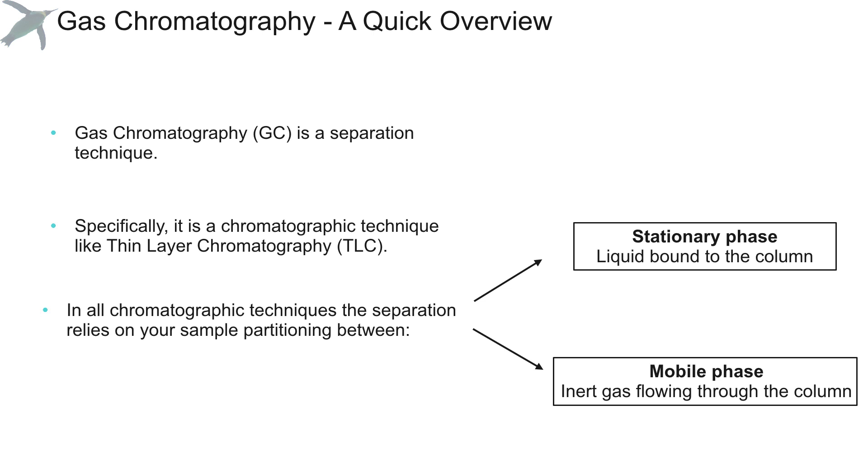In gas chromatography, the stationary phase is a high boiling point liquid, which is bound to the inside wall of a very long capillary tube called the column. The mobile phase physically moves with respect to the stationary phase. In gas chromatography, the mobile phase is an inert gas that flows through the column.